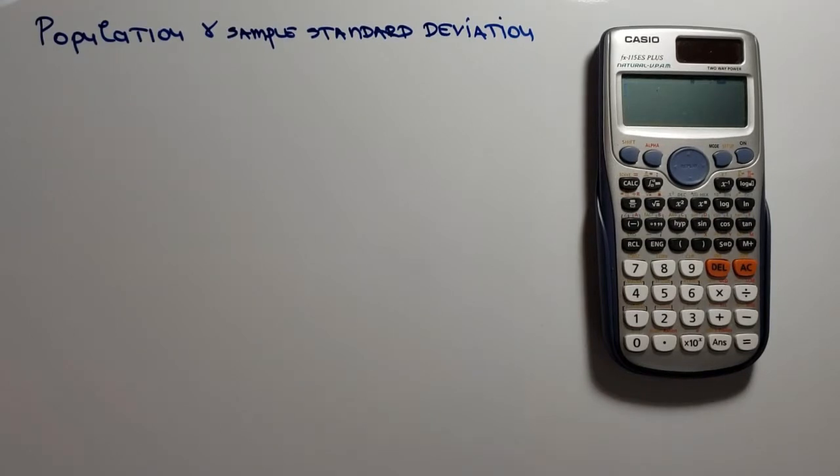Let's assume we have a bank service call center and we have distribution of customer service calls length for a month. There are 30,000 calls for that month. This would be population and we calculate population mean and population standard deviation. Now let's assume we take a sample of 80 calls from this population. In such case we calculate the mean of these 80 calls and we calculate sample standard deviation.